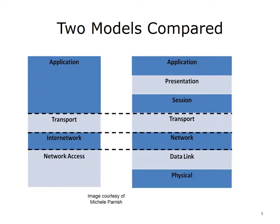The application layer of the TCP/IP model is equal to the application, presentation, and session layers of the OSI model. The transport layers in both models are equal to each other. The inter-network layer of the TCP/IP model is equivalent to the network layer of the OSI model. The network access layer of the TCP/IP model is the same as the data link and physical layers of the OSI model.